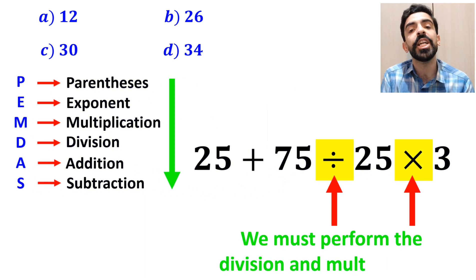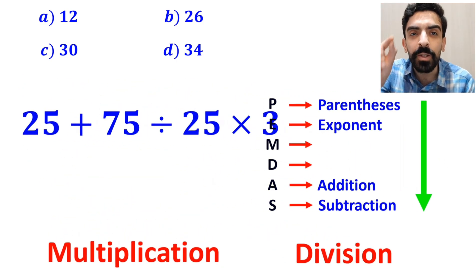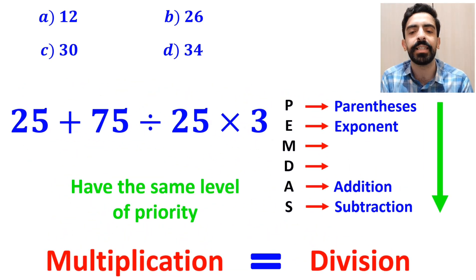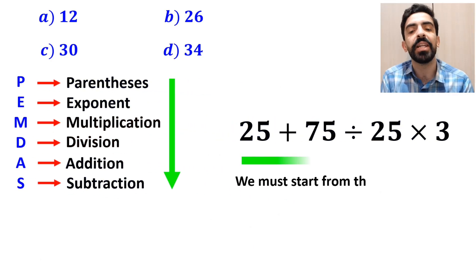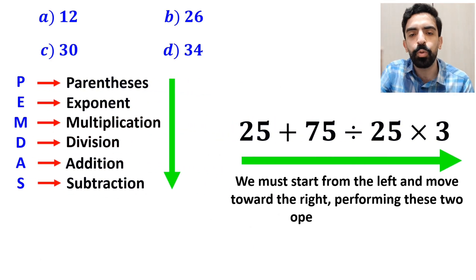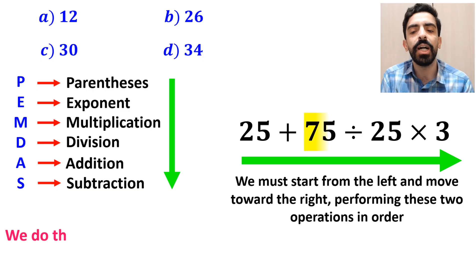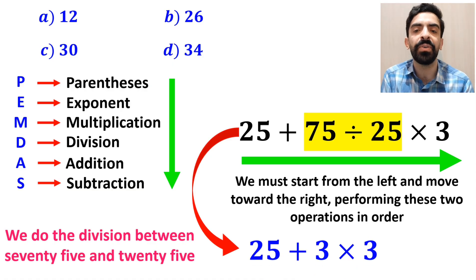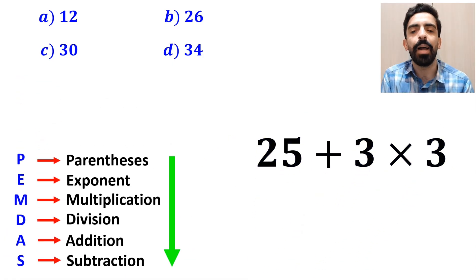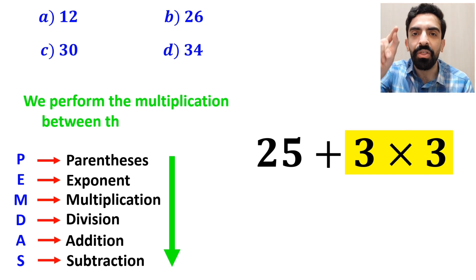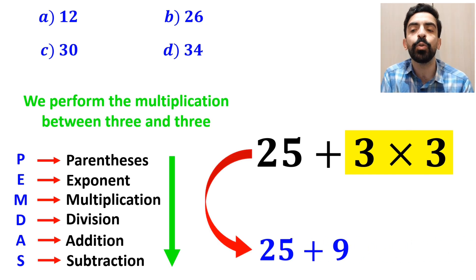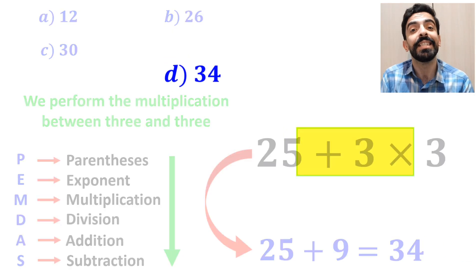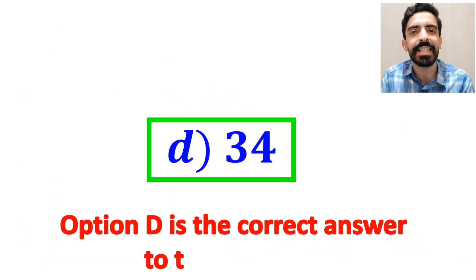Then we must perform the division and multiplication. However, it's really important to understand that in the PANDAS rule, multiplication and division have the same level of priority. In this situation, we must start from the left and move toward the right, performing these two operations in order. So first we do the division between 75 and 25, and this expression simplifies to 25 plus 3, then times 3. Finally, we perform the multiplication between 3 and 3, which simplifies the expression to 25 plus 9. The value of this expression is 34. Option D is the correct answer to this question.